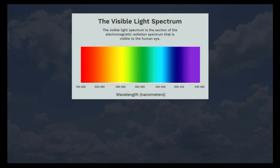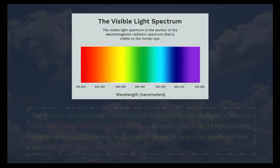This is where being human comes in. Our human eyes perceive the middle of the spectrum most sharply, which is why blue is way easier to see than violet, which is at the ultraviolet end of the spectrum. So even though violet light is being scattered around like crazy, we just don't detect it as well as we detect the blue.